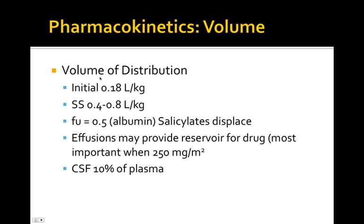Moving on to volume of distribution. Initially you have a volume of distribution of 0.18 liters per kilogram. At steady state it increases to 0.4 to 0.8 liters per kilogram — a pretty small volume of distribution, closer to total body water. The increase tells you there are probably at least two compartments: an initial compartment and then your eventual steady-state volume of distribution.